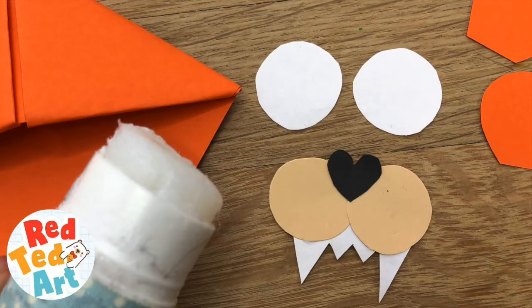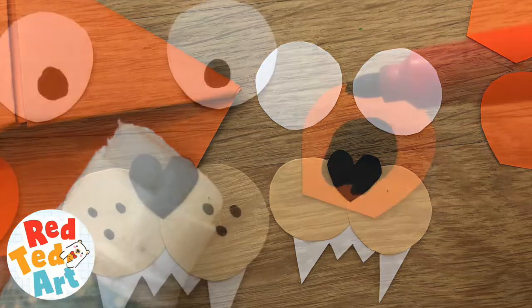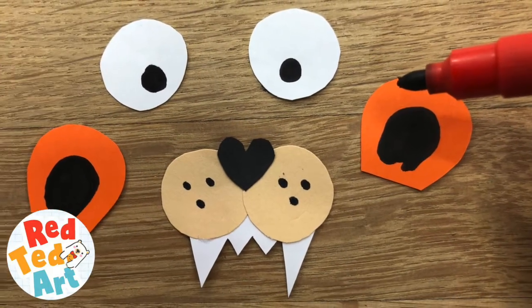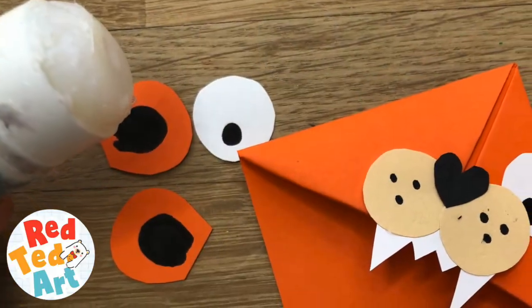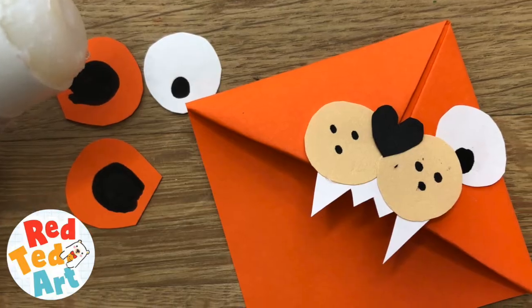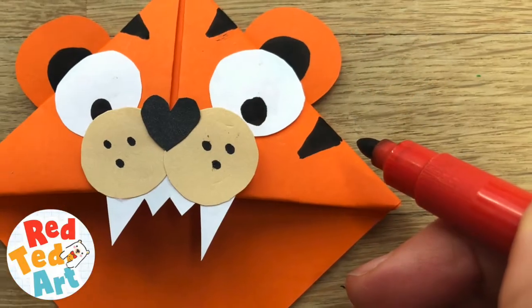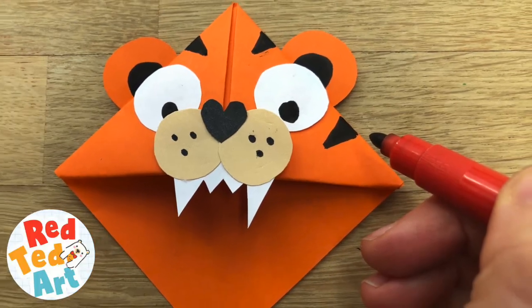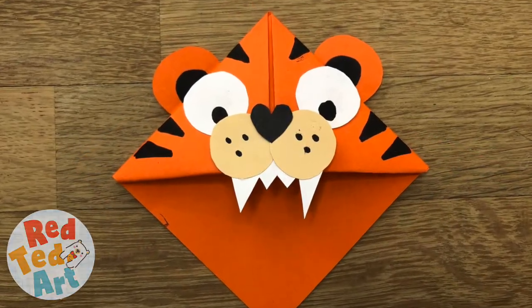Glue your mouth parts together. Add pen details to the eyes, ears and mouth. And start gluing to your orange corner bookmark. At the end, just add some tiger stripes. And your tiger corner bookmark is finished.